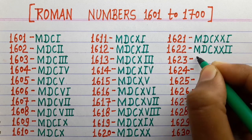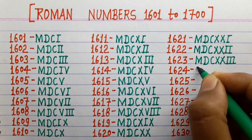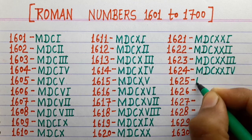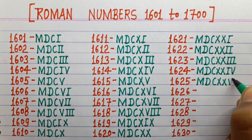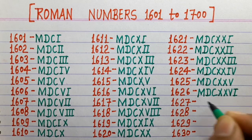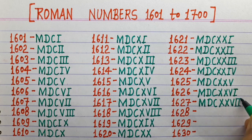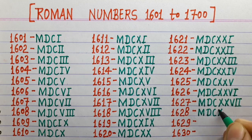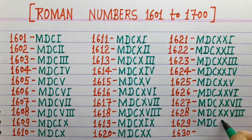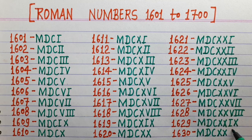1621 MDCXXI, 1622 MDCXXII, 1623 MDCXXIII, 1624 MDCXXIV, 1625 MDCXXV, 1626 MDCXXVI, 1627 MDCXXVII, 1628 MDCXXVIII, 1629 MDCXXIX, 1630 MDCXXX.